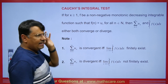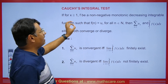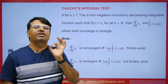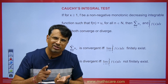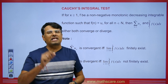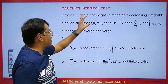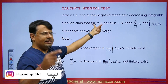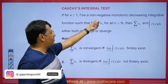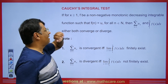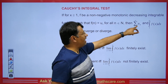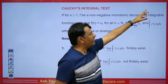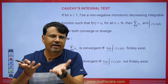Let's discuss the Cauchy Integral Test. If x is greater than or equal to 1 and F is a non-negative, monotonically decreasing, integrable function, then if F(n) equals U_n — our series whose nth term is U_n — then the summation n=1 to infinity of U_n and the integral from 1 to infinity of F(x) dx will either both converge or both diverge.